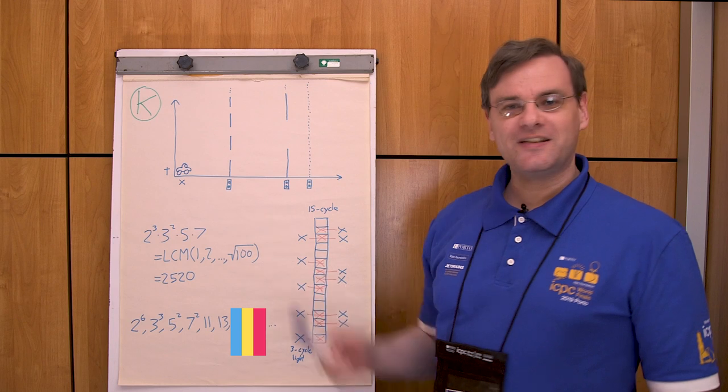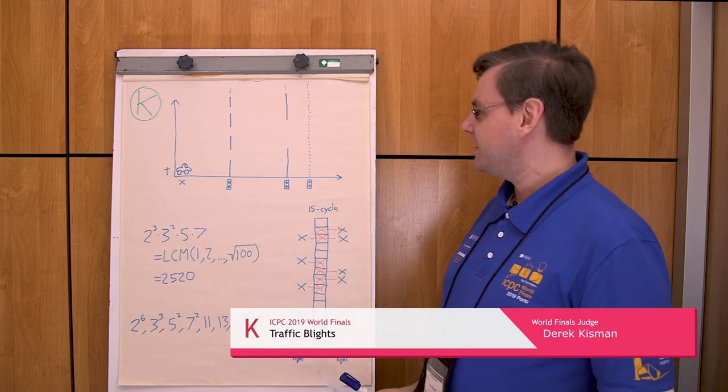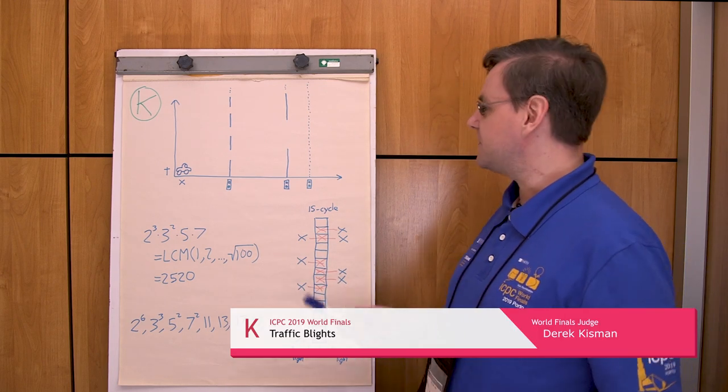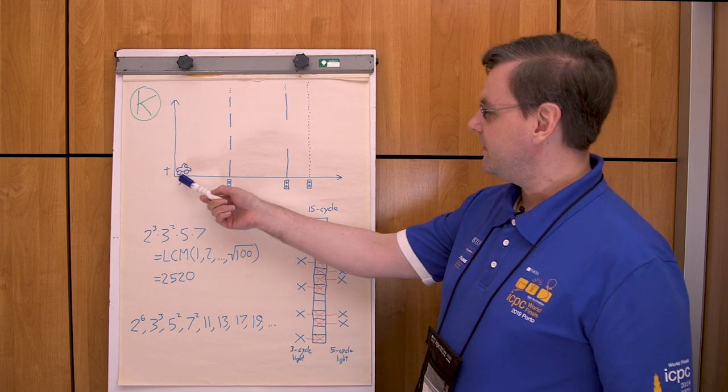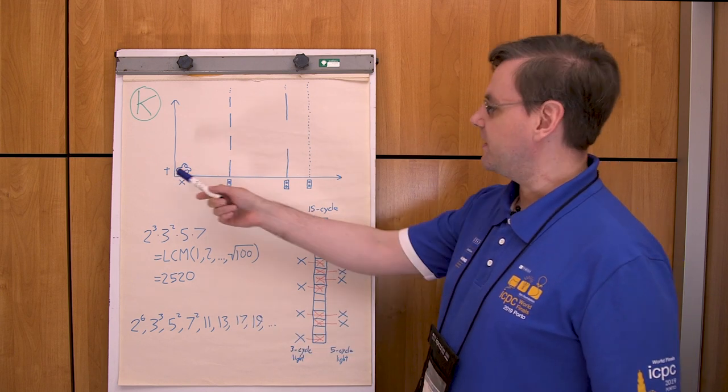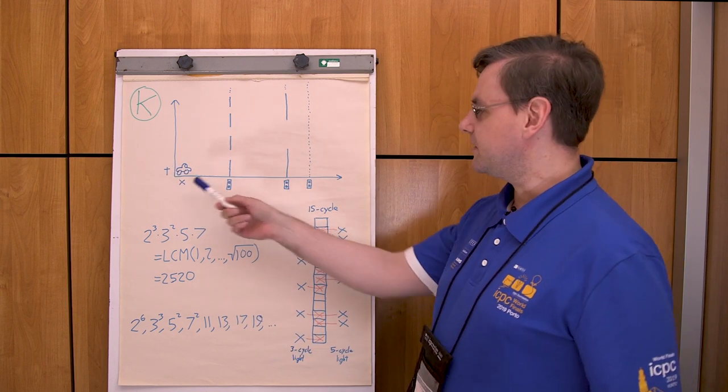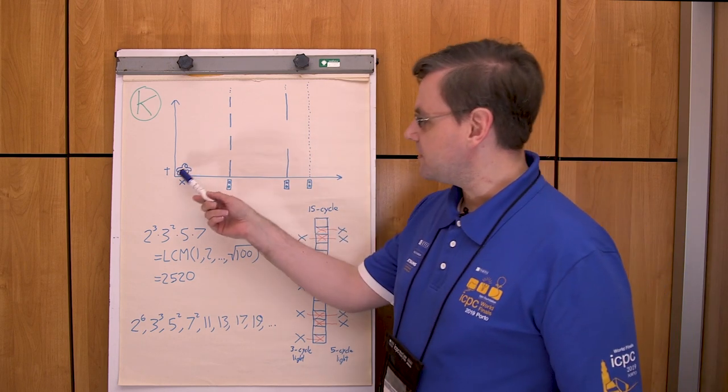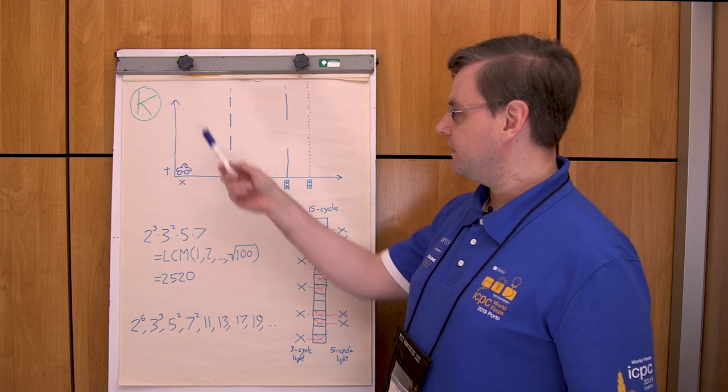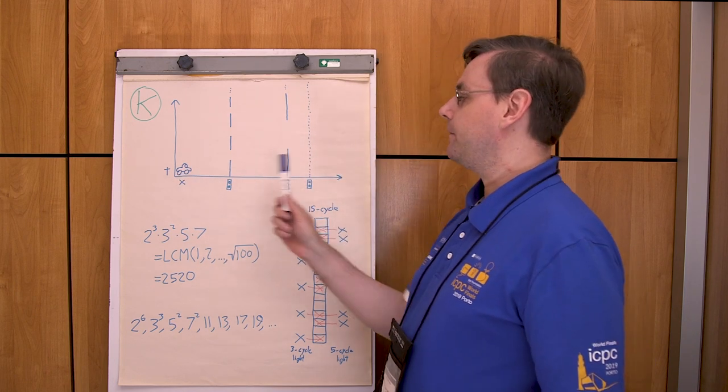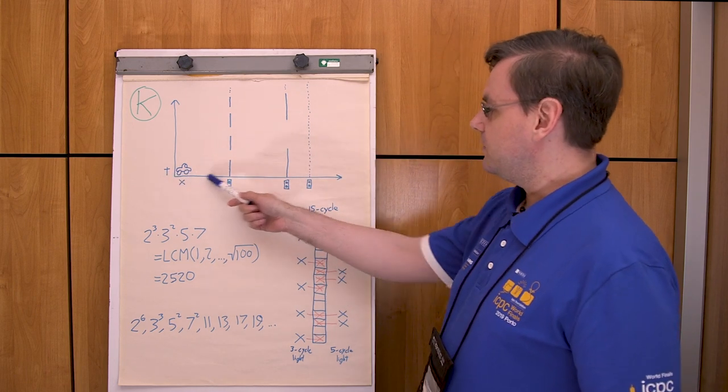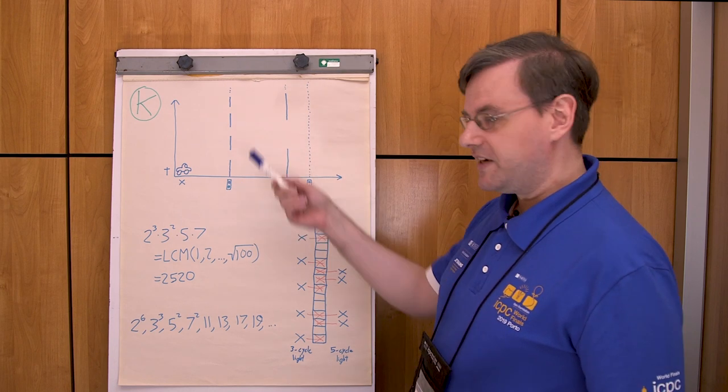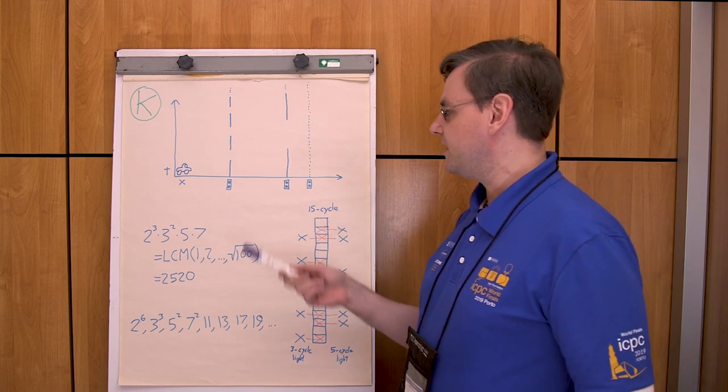This is problem K, Traffic Lights. The idea is fairly simple to describe. We have a long street with the beginning at zero and various traffic lights spread along the street. The car starts at position zero at a random time and then moves to the right, potentially hitting some traffic lights.